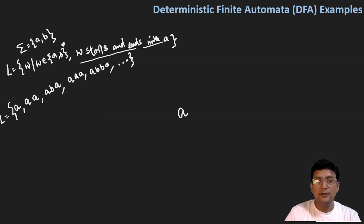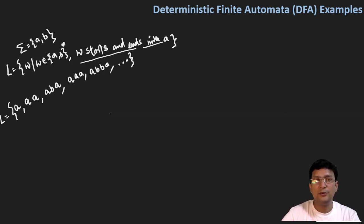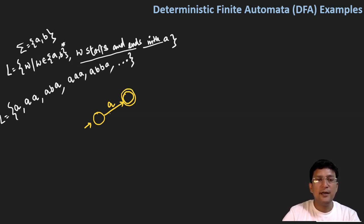Now if I have to design the DFA for this, the smallest string accepted is 'a'. My automata should accept the string 'a'. So if I get 'a', I move to a state — let's say this is the final state. In the starting, if I get an A I move to a state which is a final state. If I get a B after this, I should move back to the starting state. And if I get an A after this, I'll again move to the final state.